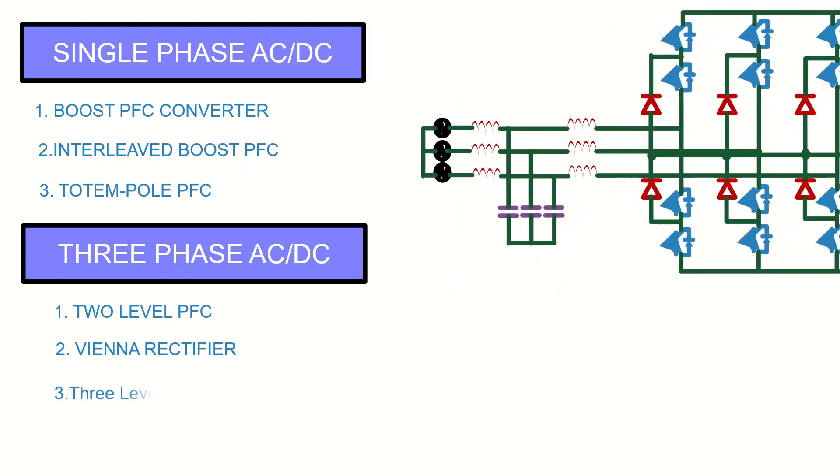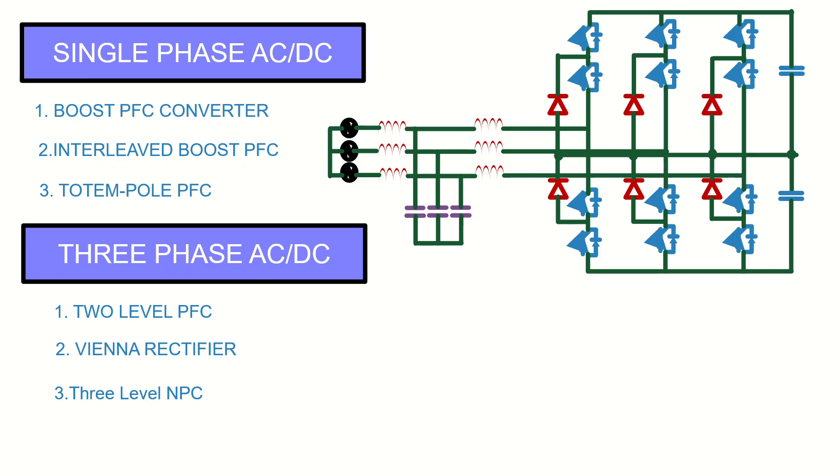Another topology is the three-phase neutral point clamp three-level PFC. This topology has the lowest device stress among all the three topologies. The filtering requirement is also less for this topology, so size of the inductor can be reduced, which improves the overall power density of the system. This topology also offers bi-directional transfer of power, and is the preferred choice for switching frequencies greater than 50 kHz because of the lesser switching losses and greater efficiency.